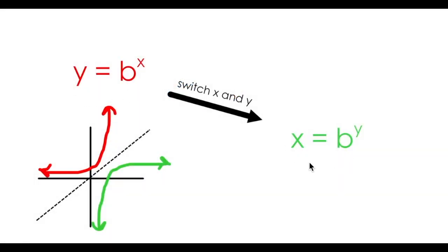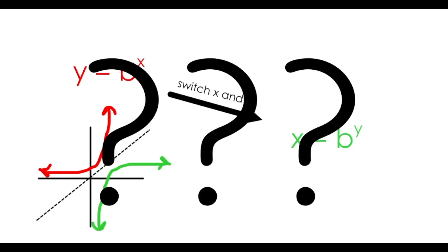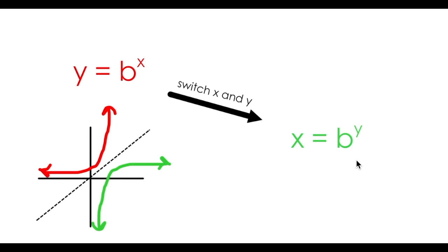Usually it's just a matter of bringing some terms over to the other side to solve for y. But in this case, how do we do that? It's a fair question. How do we isolate y if y is in the exponent?